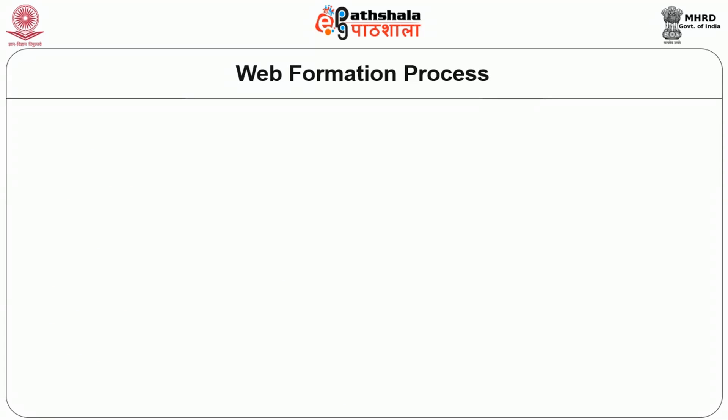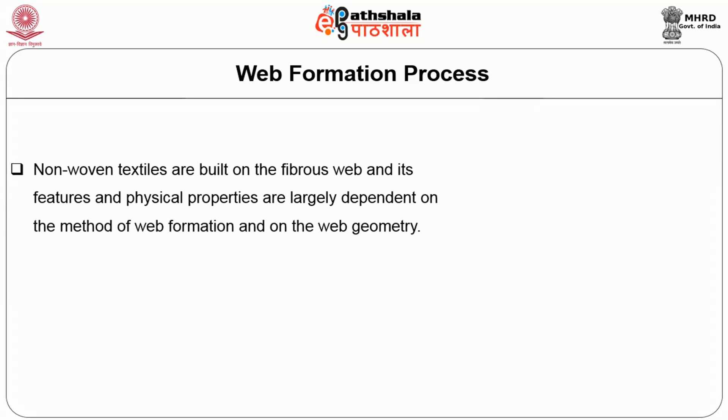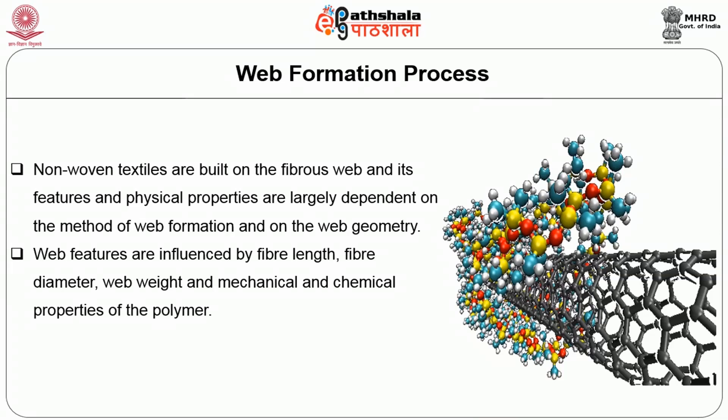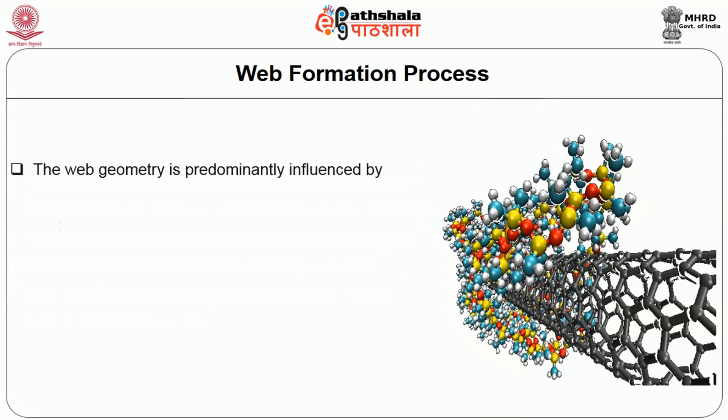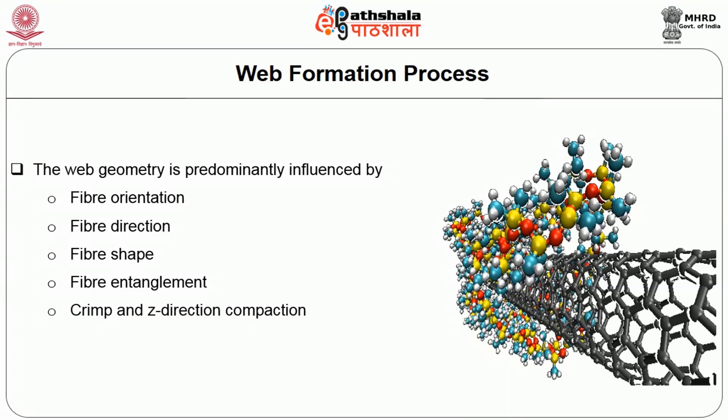Now let's go into detail about how the web formation actually occurs. Nonwovens textiles are built on a fibrous web and their features and physical properties are largely dependent on the method of web formation and on the web geometry. Web features are influenced by fiber length, fiber diameter, weight, web weight, and the mechanical and chemical properties of the polymer, whereas the web geometry is predominantly influenced by fiber orientation, fiber direction, fiber shape, fiber entanglement, crimp and the number of fibers in the Z-direction and compaction.